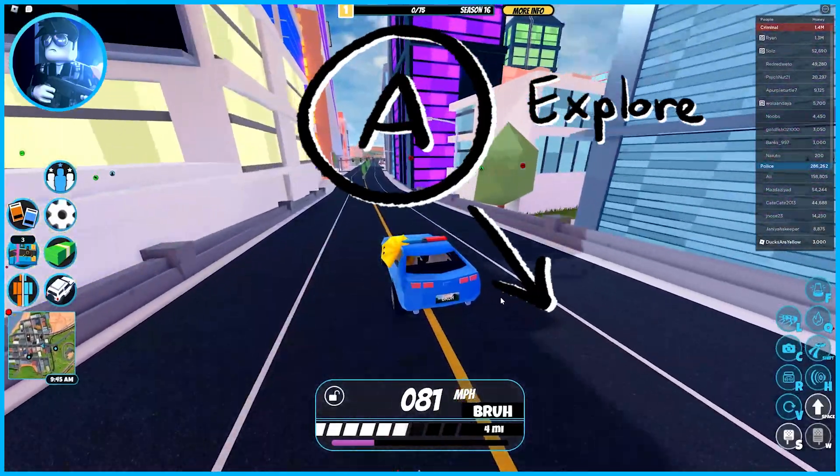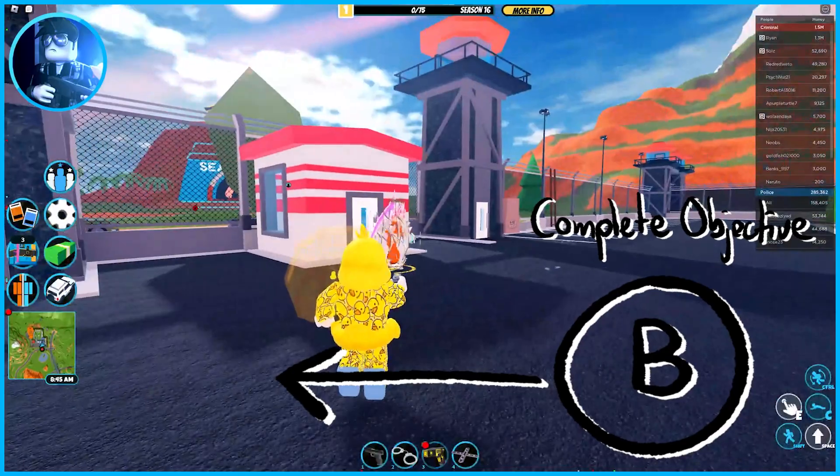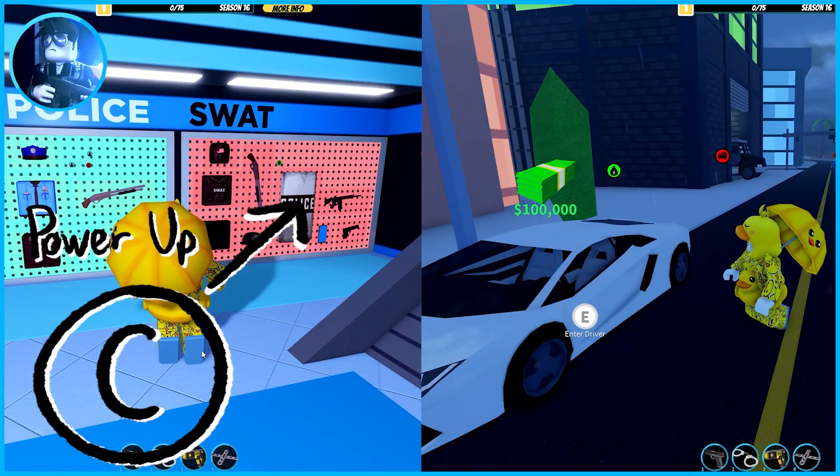If you're with the police, exploring means searching the town for a criminal to detain. Completing objective means detaining criminals, and powering up means purchasing weapons and vehicles.